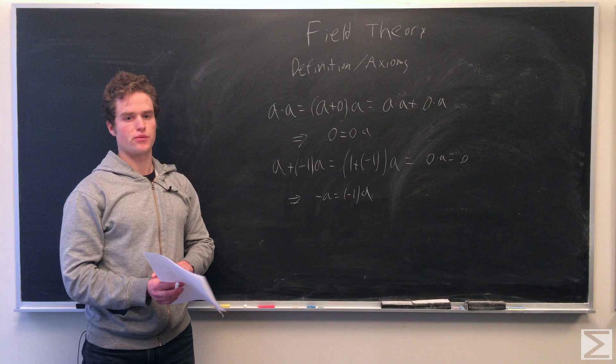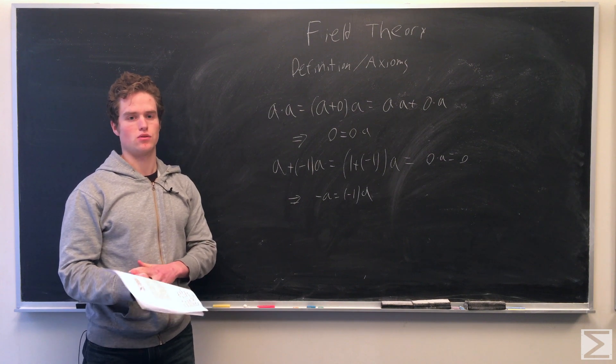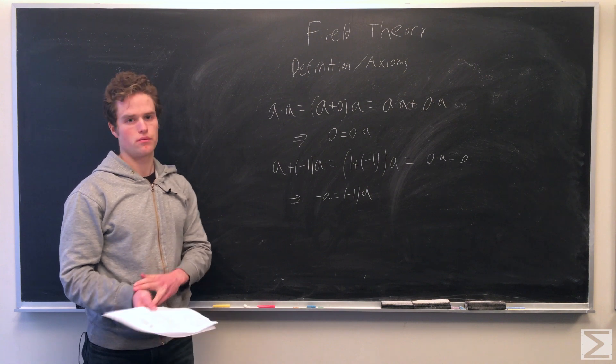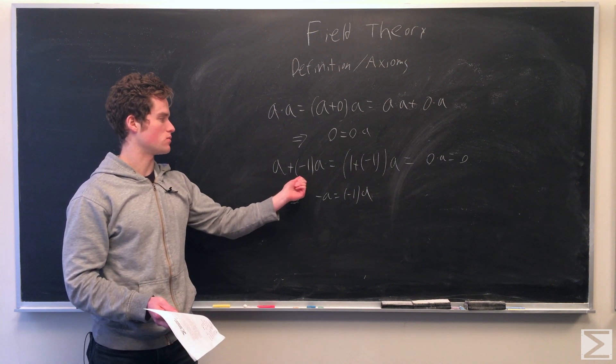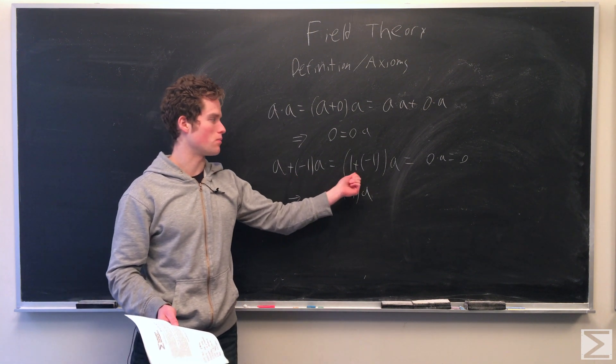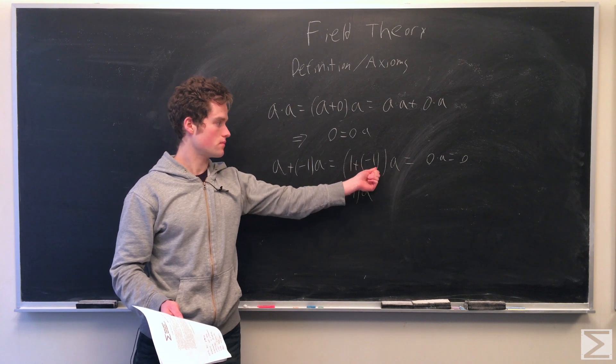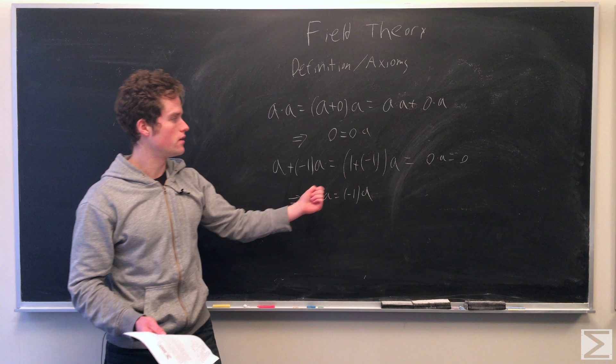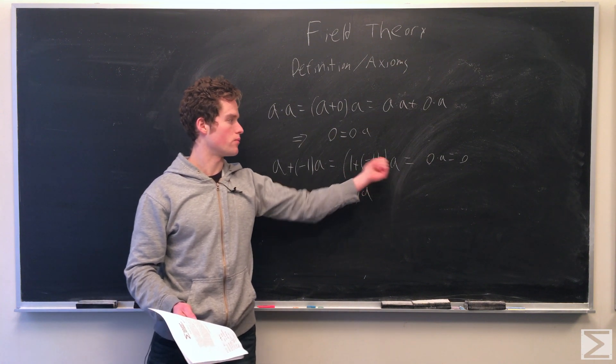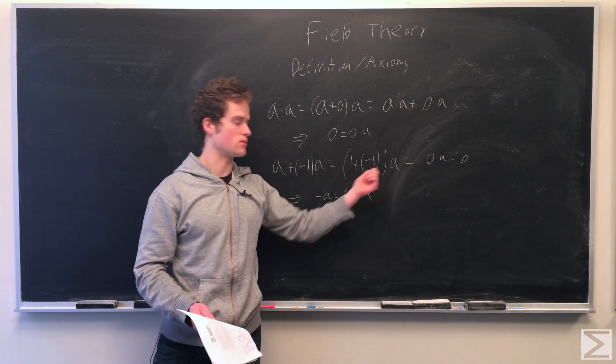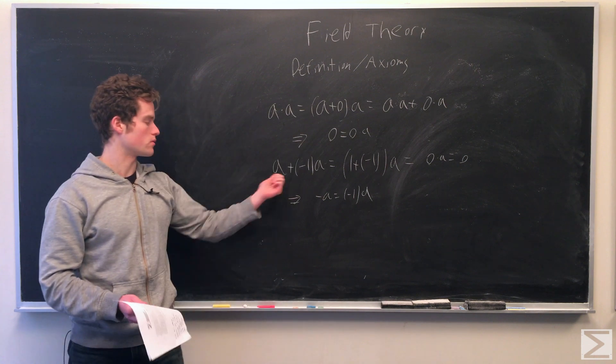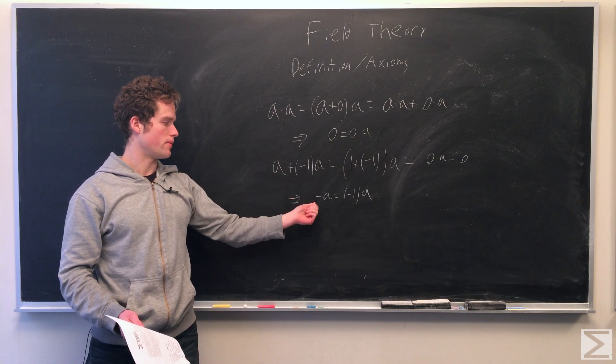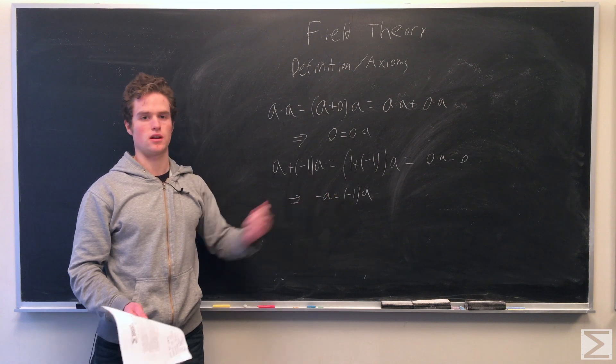The next thing we can show is that negative one times an element gives you the additive inverse of that element. Consider A plus (-1) times A, which equals (1 plus (-1)) times A. Minus one is the inverse of one, so that's zero. We showed zero times any element is zero. So zero equals A plus (-1)A. Adding the inverse of A, we get the inverse of A equals (-1) times A.